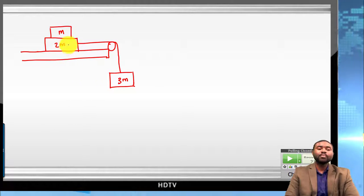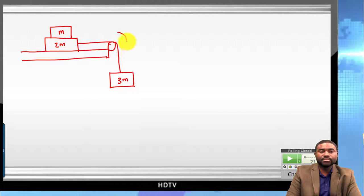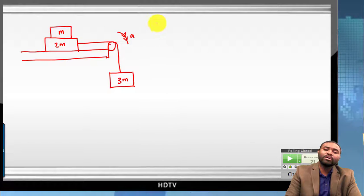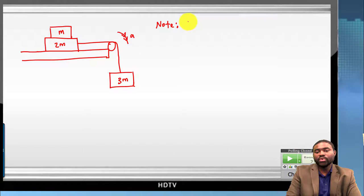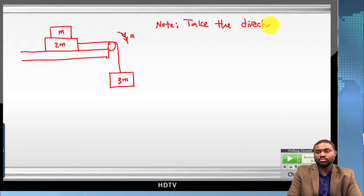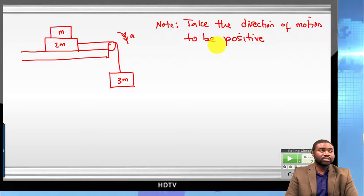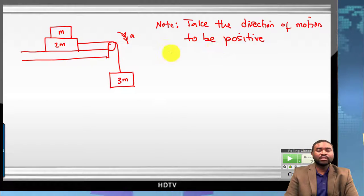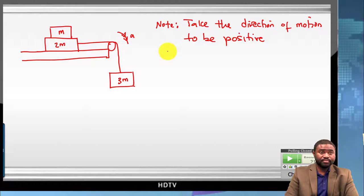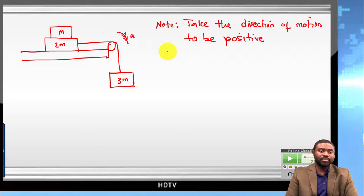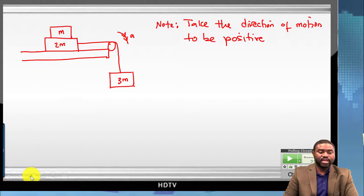The very first step in analyzing and solving a problem of this caliber is always to begin with a free body diagram. So everybody please draw the free body diagram for block 1, block 2, and block 3. The system accelerates in this direction. We will take the direction of motion to be positive. As long as the pulley is massless, the tension in the string remains the same.